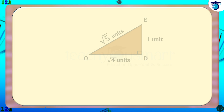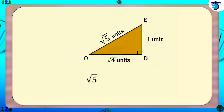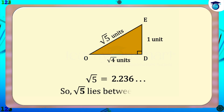The value of root 5 is 2.236..., so root 5 lies between 2 and 3.